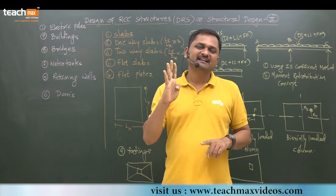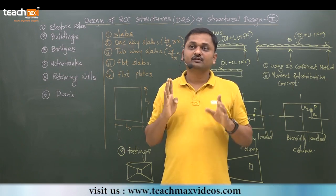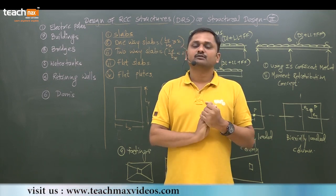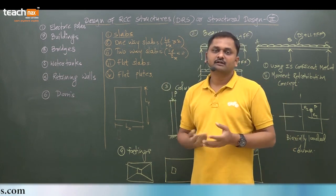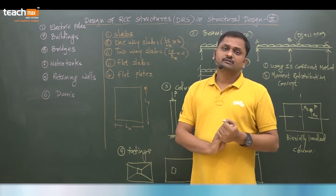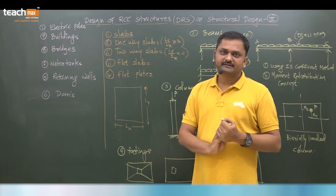In short, we are going to design slabs, beams, columns, and footings. These are the four main structural elements that occur in RCC structure. If you are able to design this, definitely you can design the whole RCC building in short.